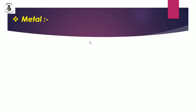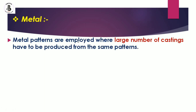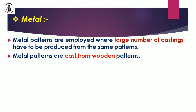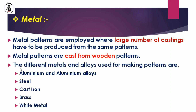The next pattern material is metal. Metal patterns are employed where a large number of castings have to be produced from the same pattern. Metal patterns are initially cast from wooden patterns — so a wooden pattern is first made, and then used to manufacture the metal pattern. Different metals and alloys used for making patterns include aluminium and aluminium alloys, steel, cast iron, brass, and white metal.